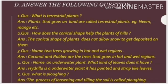Question number 4: name an underwater plant. What kind of leaves does it have? Hydrilla is an underwater plant. It has pointed and strap-like leaves. You can also write hydrilla and tape grass, but in your book that is hydrilla, so write it.